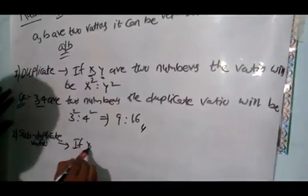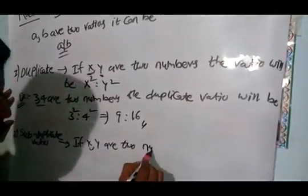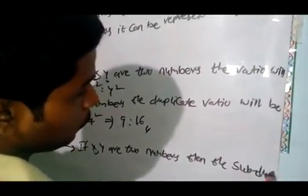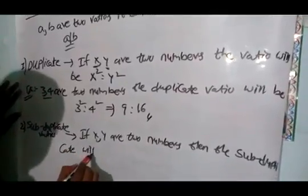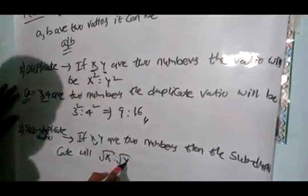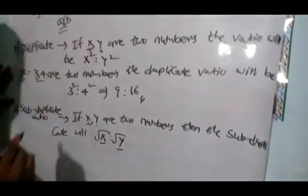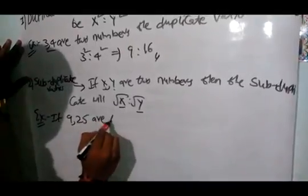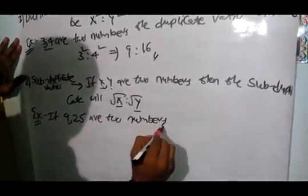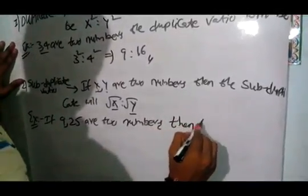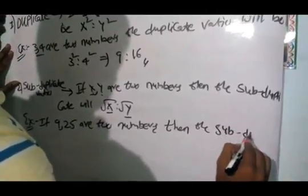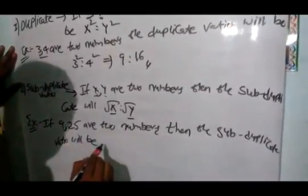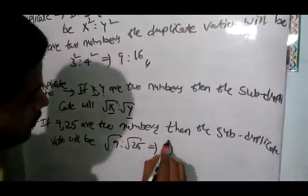Here if X, Y are two numbers, then the subduplicate will be root of these numbers - root X is to root Y. Take an example: if 9, 25 are two numbers, then the subduplicate will be root 9 is to root 25. That means root 9 means it can be 3 square is to 5 square. Root square gets cancelled, that means 3 is to 5.